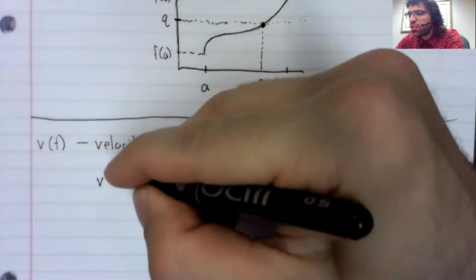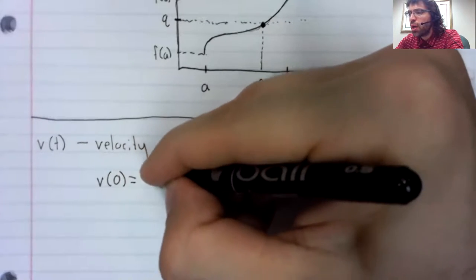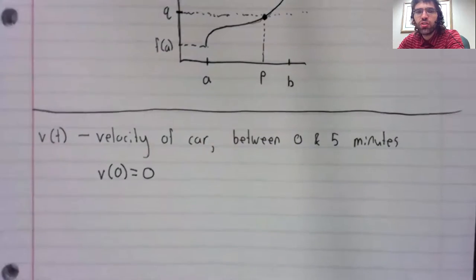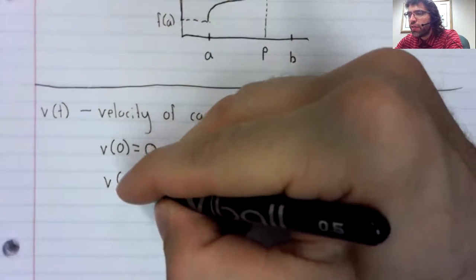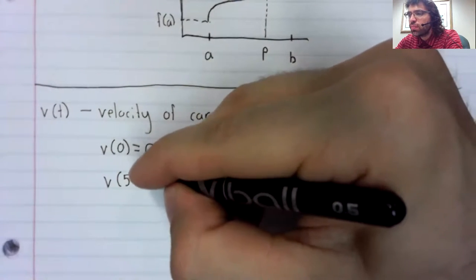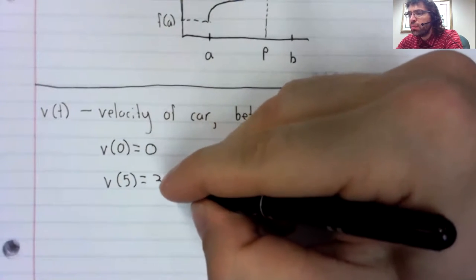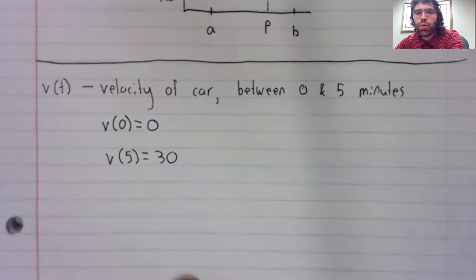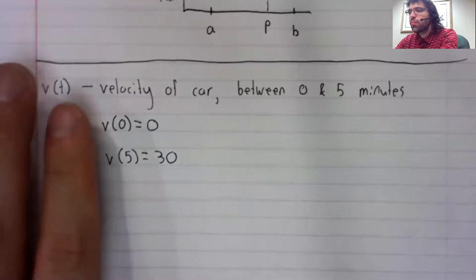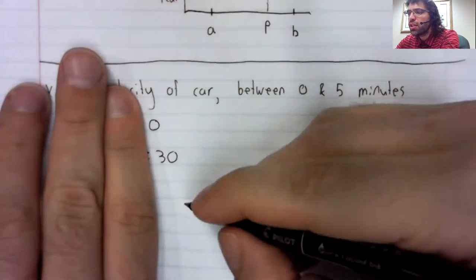At time zero, the car was parked, its velocity was zero. At five minutes, the car is traveling at 30 miles per hour. Pick any velocity between zero and 30, say 25 miles per hour.